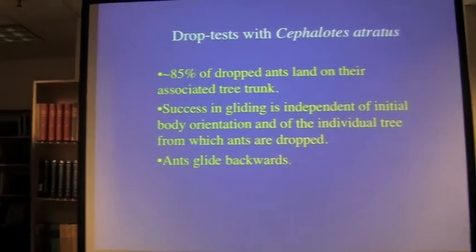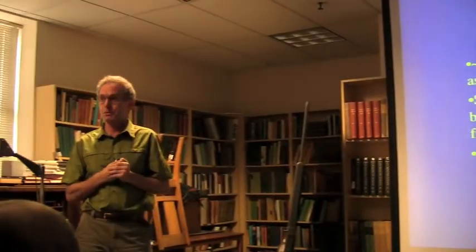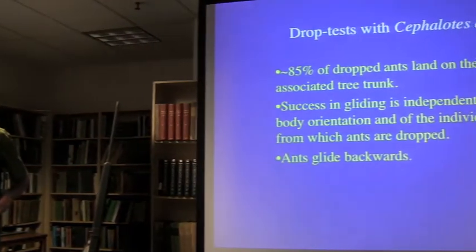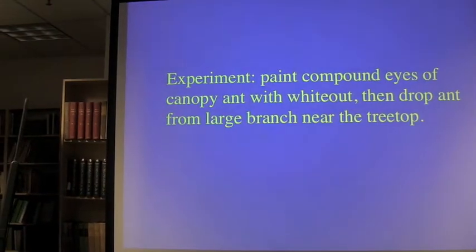Success in gliding is independent of orientation and of the individual tree. Ants glide backwards. You know this because we paint the hind legs white, and you can see clearly the descent is leading with the abdomen. Backwards flight is really something you don't see very often in the flight literature. These ants are gliding backwards. That was shocking to me as a flight biologist.